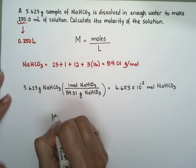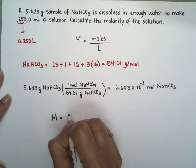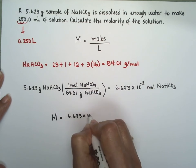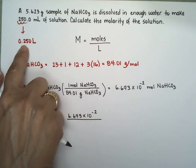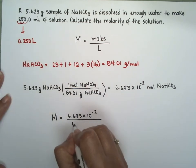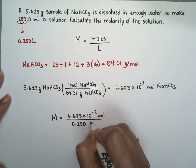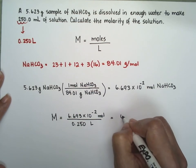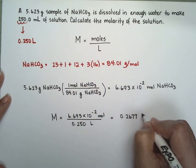We're ready to calculate our molarity. So we have this many moles, and we have our liters of solution. I'm going to go ahead and put the units, because I like the units. So it's 0.2677, we are not done.